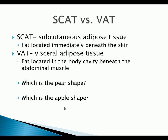What about SCATs versus VATs? SCAT stands for subcutaneous adipose tissue — fat located immediately beneath the skin. VAT is visceral adipose tissue — fat located in the body cavity beneath the abdominal muscle. Most pear shapes are SCATs, which are the 'jelly bellies' you can pick up and feel soft. Most apples are VATs — those with the hard, rounded abdomen you could bounce a quarter off. You can also have a combination of both. The shape and type of fat distribution significantly influences diabetes risk.